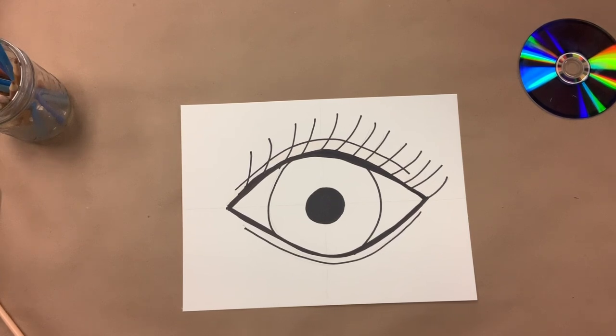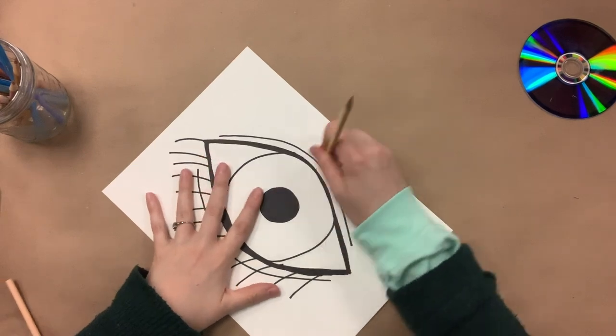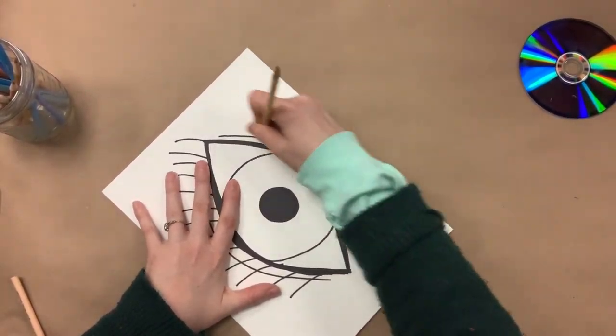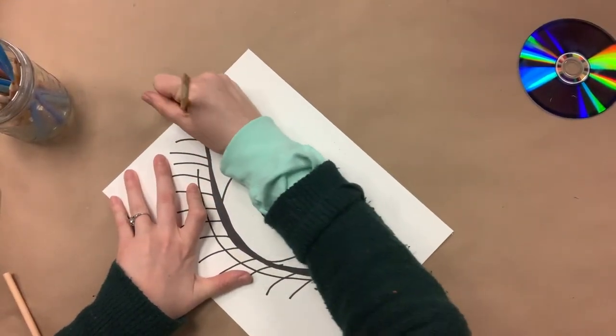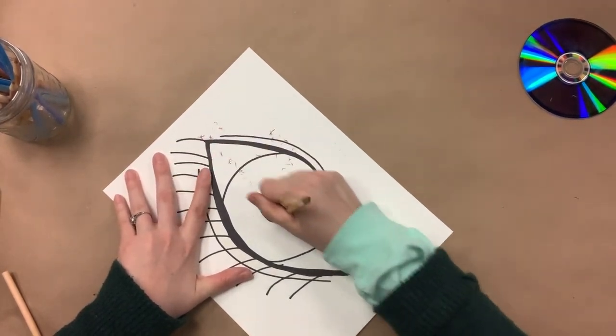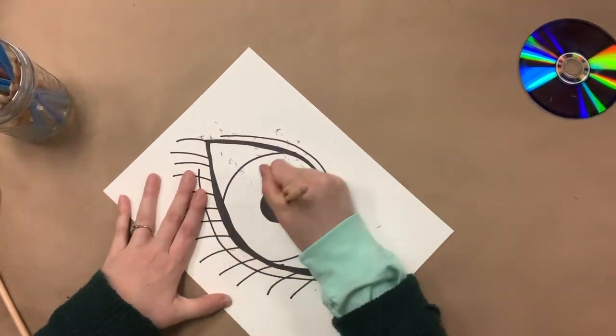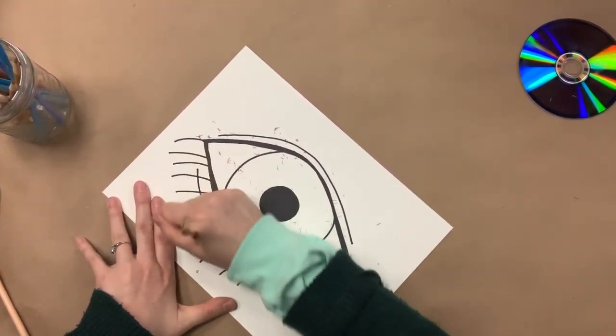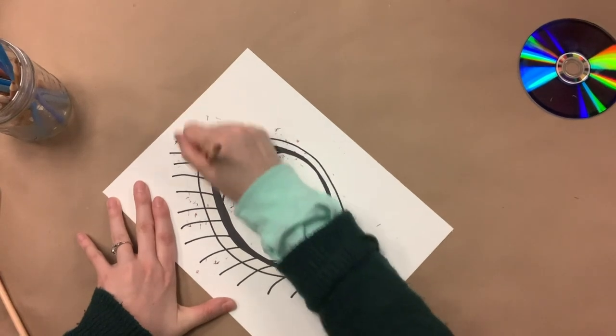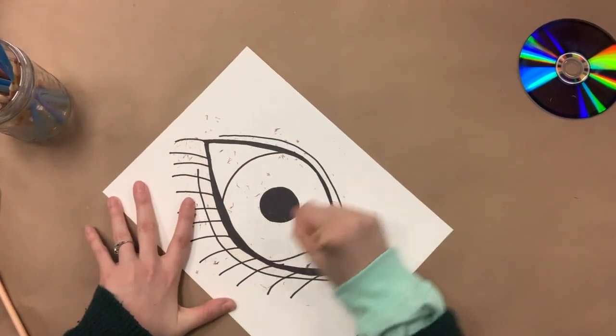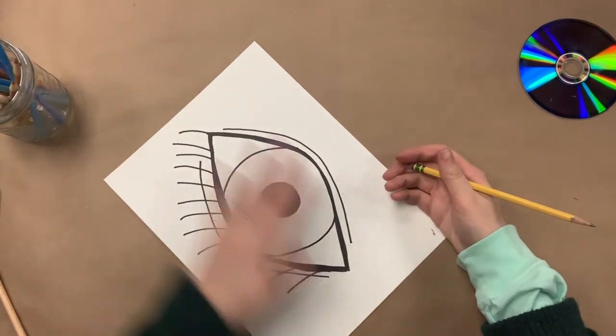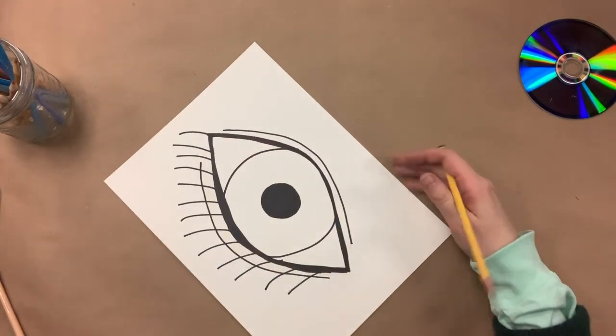So now that we've outlined our eye with Sharpie marker, you're going to take your pencil or you're going to find an eraser, and you're going to erase all your pencil marks that you already had. The reason that we're doing this now is because once we start filling in with colored pencil, we don't want to have to go back and erase.